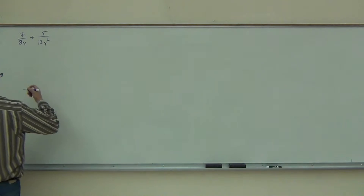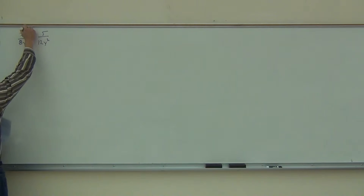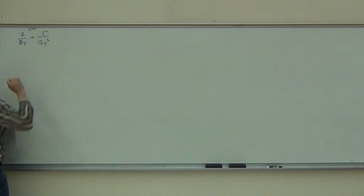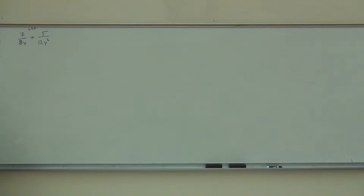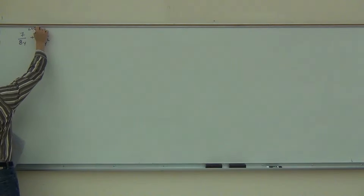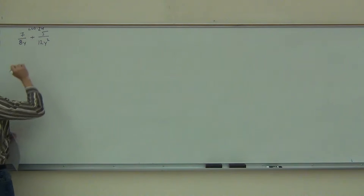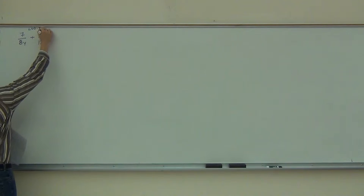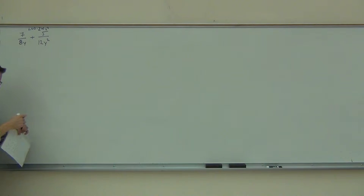The first thing we do is find an LCD because we need that. What is our LCD here? The number part is 24. And the variable part? Y squared. Hopefully you got 24y squared.